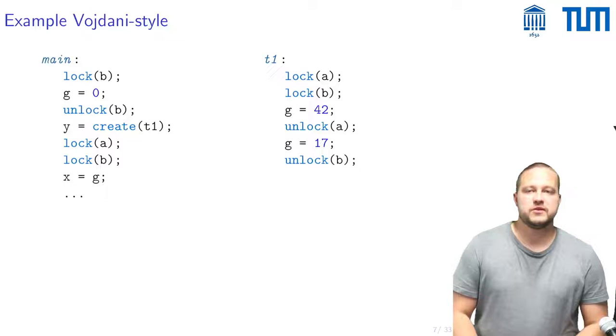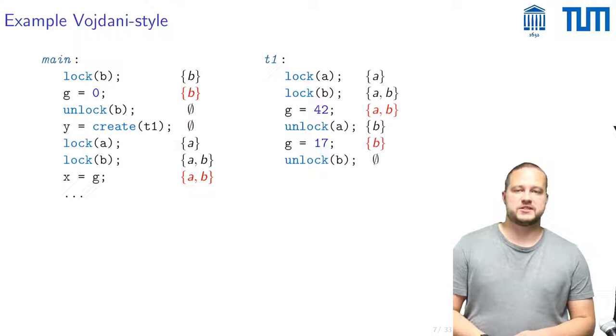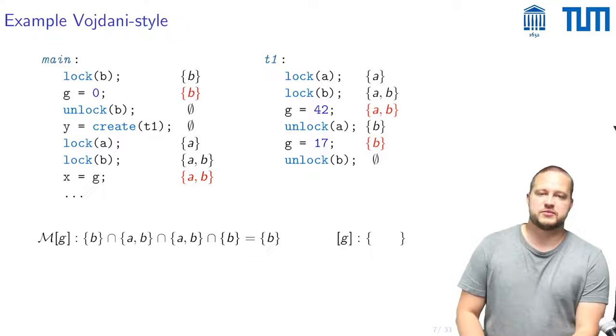So let's take a look at a small example. Here we have our program again this time annotated with the lock sets for each program point. The first step here would be to compute the set of protecting mutexes so one would look at all of the places where this global G is accessed and then look at the lock sets at these places and simply take the intersection so the protecting lock set here would simply be B.